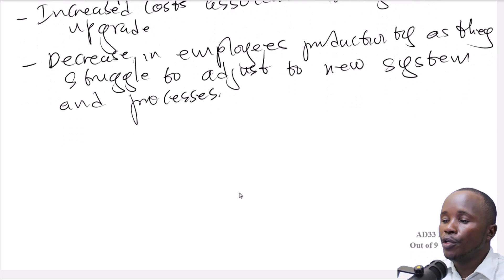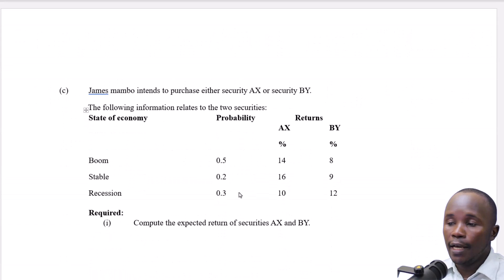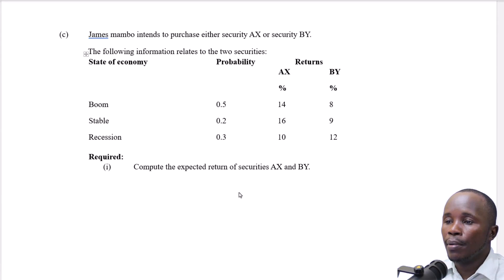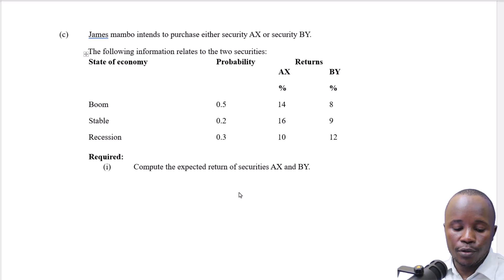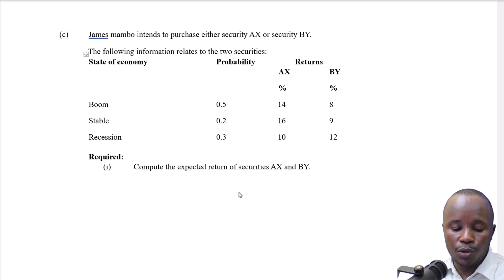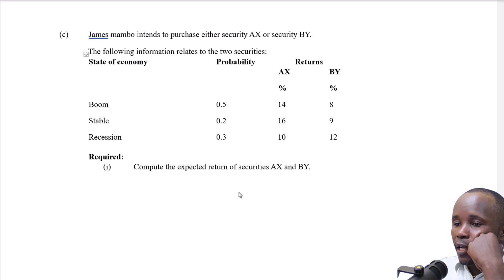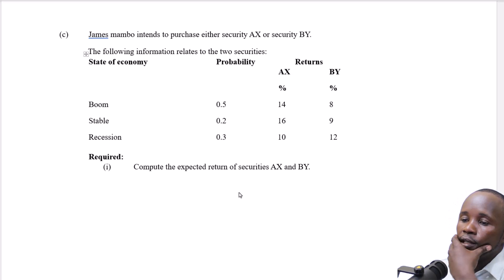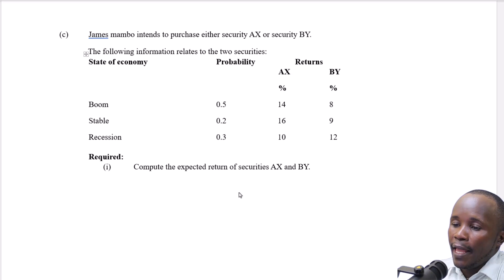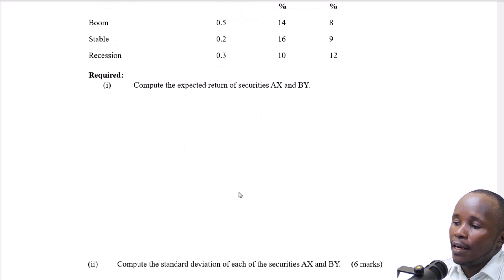Now we move on to the next part. Mambo James intends to purchase either security AX or security BY. He has two choices. The state of the economy is given: boom has a probability of 0.5, stable has a probability of 0.2, and recession has a probability of 0.3. We are told to compute the expected return for AX and BY.